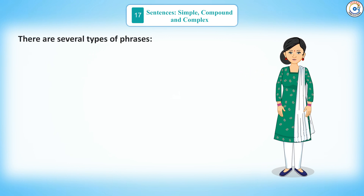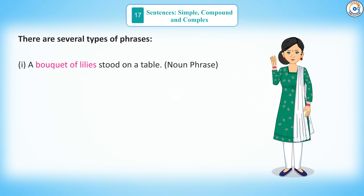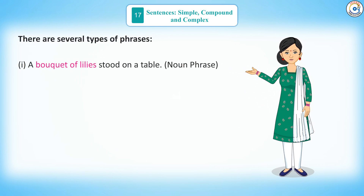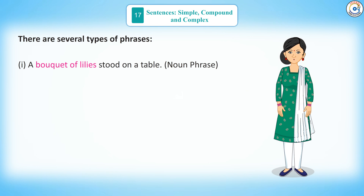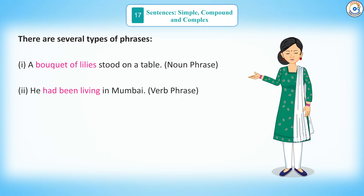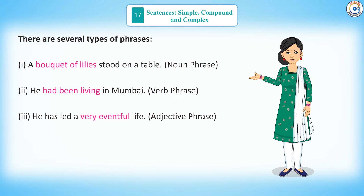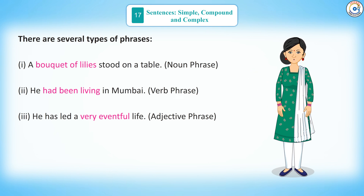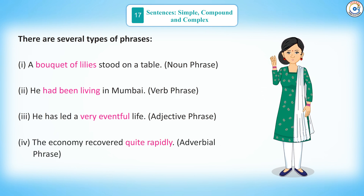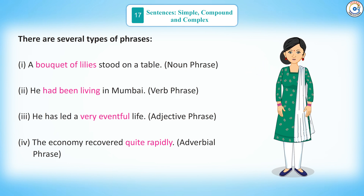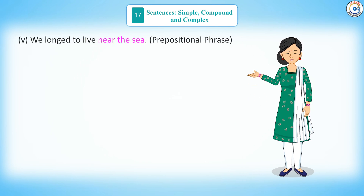There are several types of phrases. 1. 'A bouquet of lilies stood on a table' – Noun Phrase. 2. 'He had been living in Mumbai' – Verb Phrase. 3. 'He has led a very eventful life' – Adjective Phrase. 4. 'The economy recovered quite rapidly' – Adverbial Phrase.